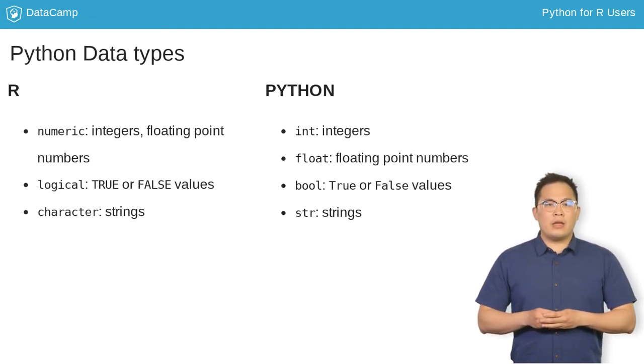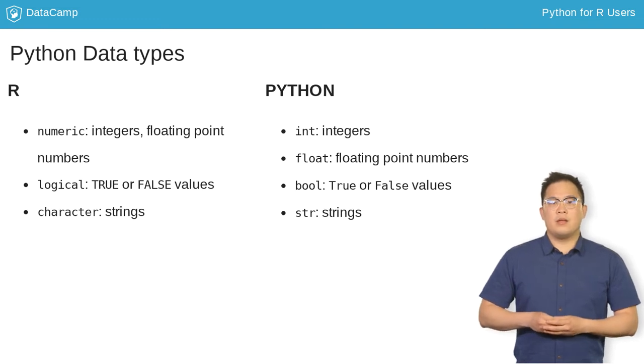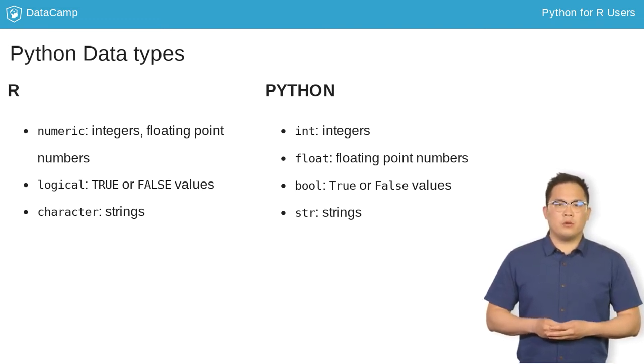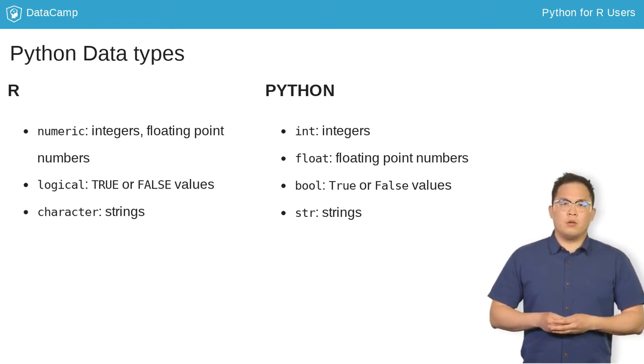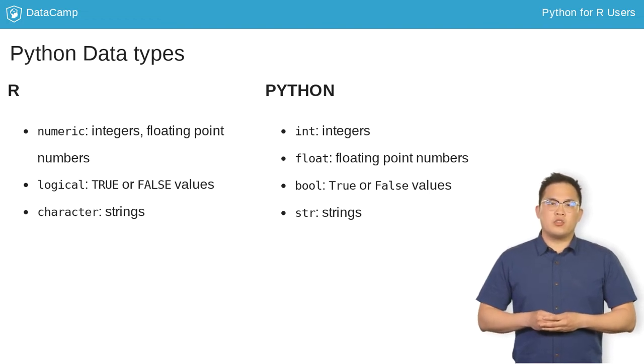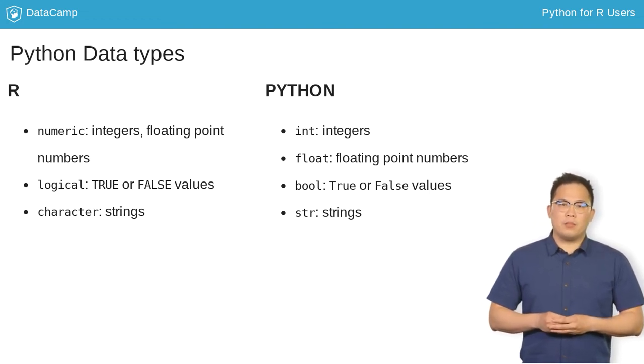Let's begin by looking at the basic data types. Similar to R, you have strings, integers, floating point numbers, and boolean values in Python. Although, the main difference is the syntax for boolean values. R has true and false values in all caps, whereas Python only capitalizes the first letter.